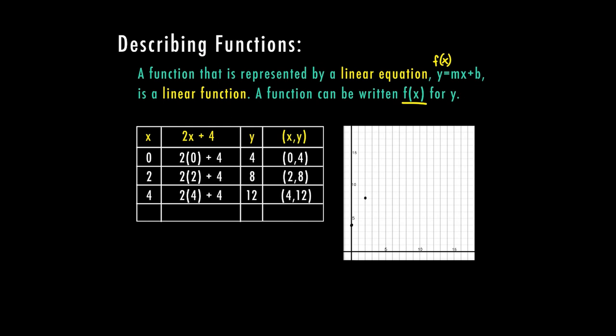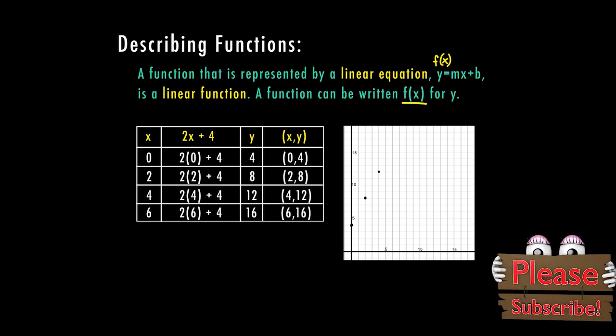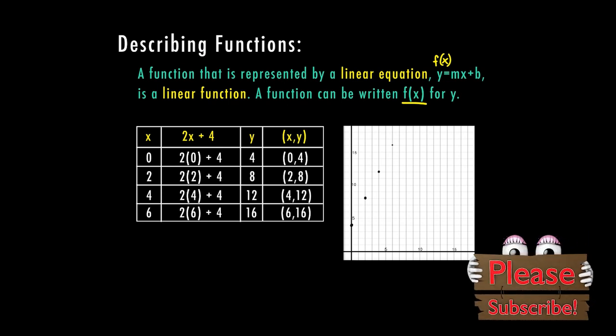Then if I plug in a 4, 2 times 4 plus 4 is 12. So I'm going to go from 4 on the x up to 12 for the y. My last ordered pair is going to be 6, 16. When I plug in a 6, my output is 16.